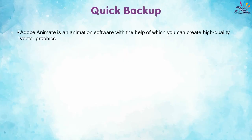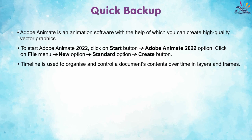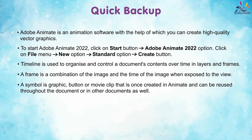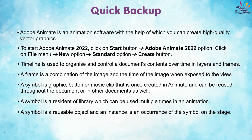Quick recap: Adobe Animate is an animation software for creating high quality vector graphics. The timeline organizes and controls document contents over time in layers and frames. A frame is a combination of an image and its display time. A symbol is a graphic, button, or movie clip created once and reused throughout documents, stored in the library. An instance is an occurrence of a symbol on the stage.